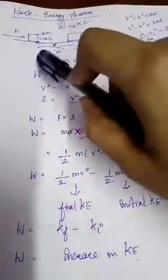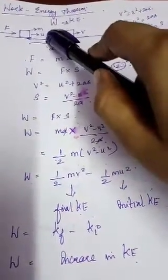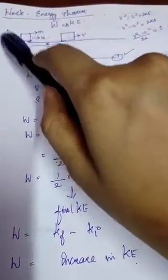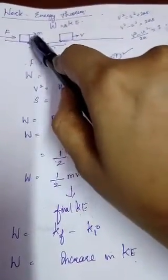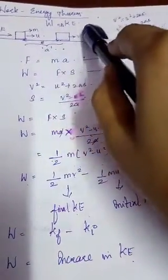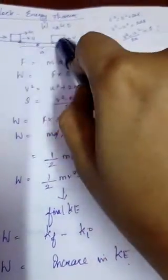Consider an object at this point moving with initial velocity u. In the same direction, I apply a force. Because of this force, the object's velocity is changing - let me note that as your final velocity v. After applying this force, the object shows a displacement. Let me note the displacement as s.